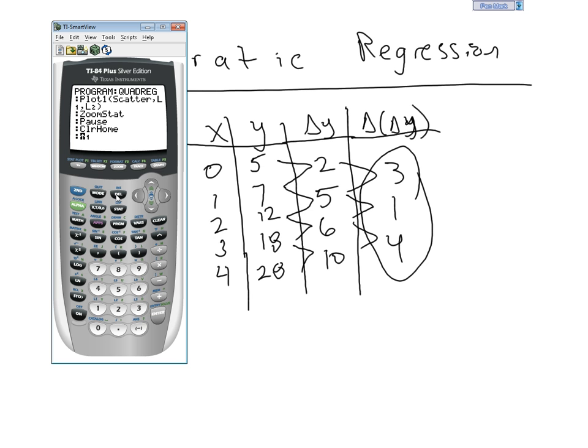Press second, del. And now go to stat. Over to calc. And select option 5. So, I'm just going to press 5. So, you should still see quadreg, a little space, and then Y1. We've got the program written.